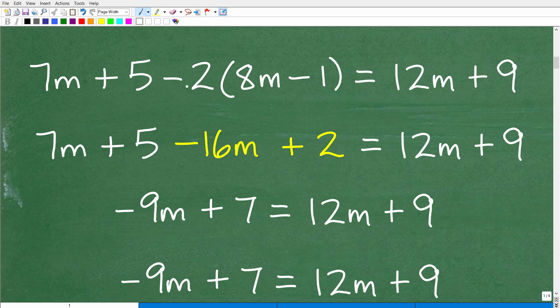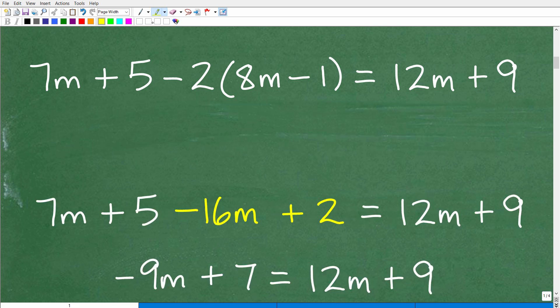Okay, so let's just keep our attention up here with the problem. We have 7m plus 5 minus 2 times 8m minus 1 equals 12m plus 9. So what are we looking to do here? Let me give myself a little space. The main idea is we need to take the necessary steps so we can get all the variable terms over here. And of course, that's all the things that involve m. So these things, all this stuff needs to scoot to the left-hand side of the equation.